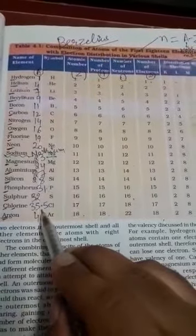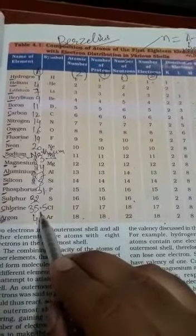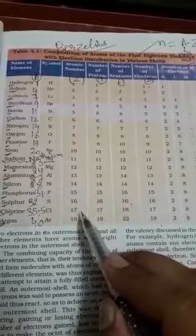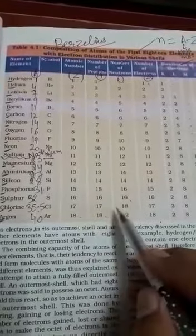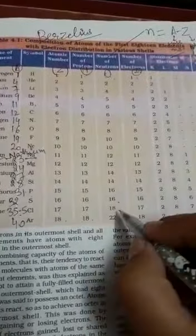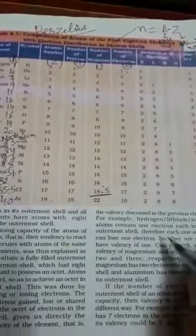But its mass is 35.5. When we subtract 17 from it, we get the answer 18.5. So correct this number. Number of neutron is 18.5.